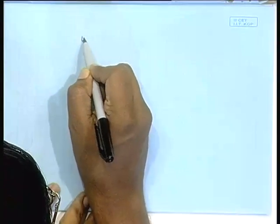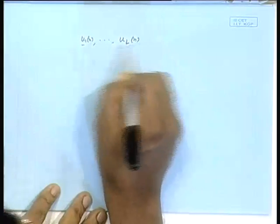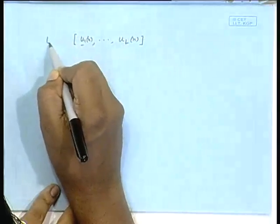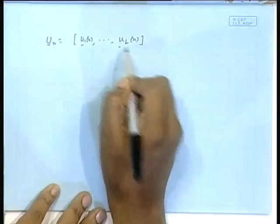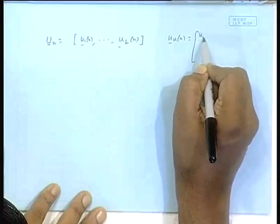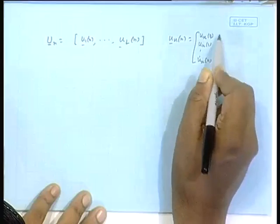To do that, we set aside the lattice thing and come to some general framework. Let us go to some definitions. Suppose you have got some vectors u_1_n, u_2_n, ..., u_l_n - l number of vectors. You form a matrix u_n, where any vector u_k_n has components u_k at index 0, u_k at index 1, ..., up to the current index.